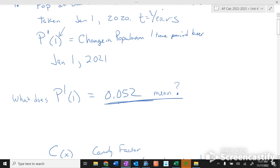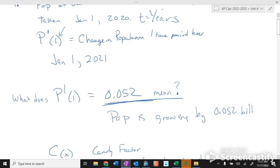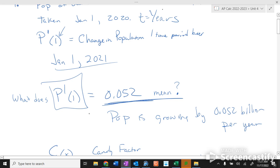What does this mean? On January 1st, 2021, the population is growing this many billion per year. Is that reasonable for you guys to understand? Because this is change in. This is one year after the original year, and this is how much it is changing.